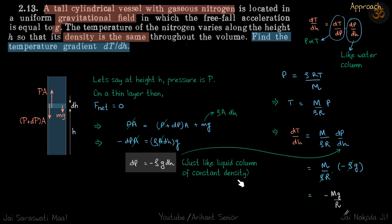Just like liquid column of constant density. So you might be thinking there was not any negative sign. That was because in the water column we generally take the height from the top of the liquid, but here we are taking the height from the bottom. So that's why we have a negative sign. So from the bottom as you go up the pressure decreases. So if height increases, pressure decreases. So if dH is positive then dP is negative. But otherwise conceptually it is just like a liquid column of constant density.